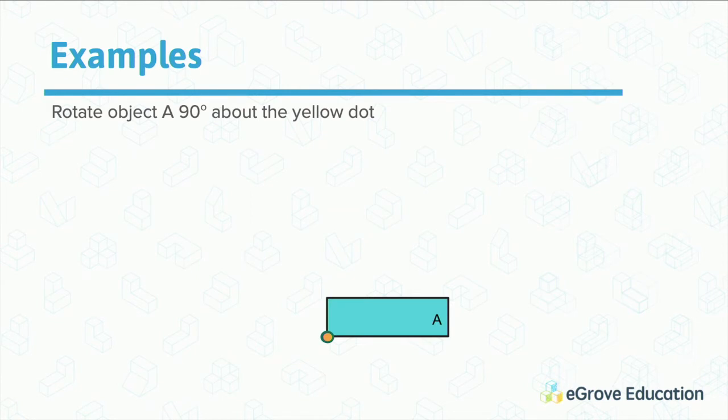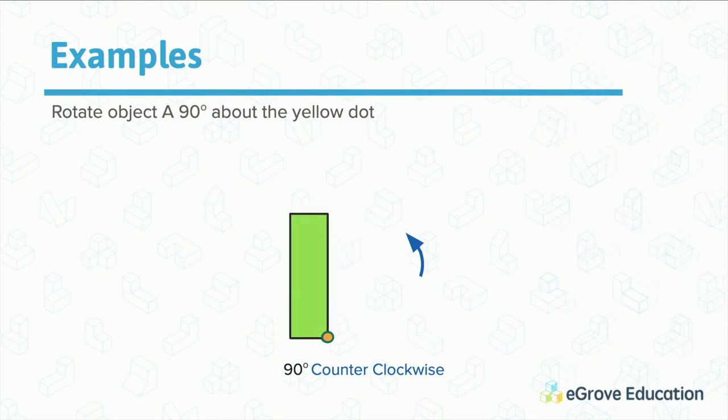Now we're rotating the object positive 90 about the yellow dot. If we go positive, we end up there.